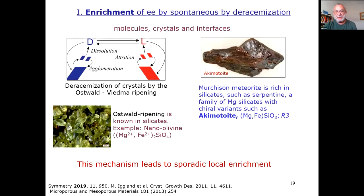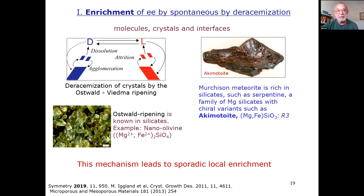If we detect a certain specific value of enantiomeric excess on planet Mars or any other place, what might affect it? Here are five parameters. First, there is enrichment of enantiomeric excess by spontaneous deracemization — well known in chemistry with molecules, crystals, and interfaces. For solids, it's called Ostwald-Wigner ripening, which is known for silicates. Interestingly, some silicates in the Murchison meteorite are chiral silicates, like achimotide.